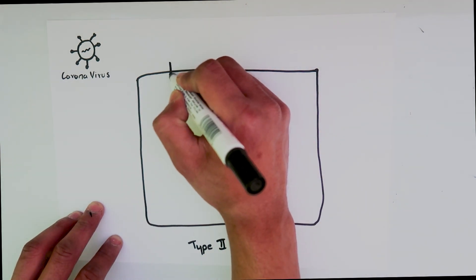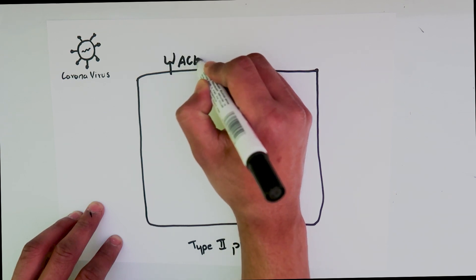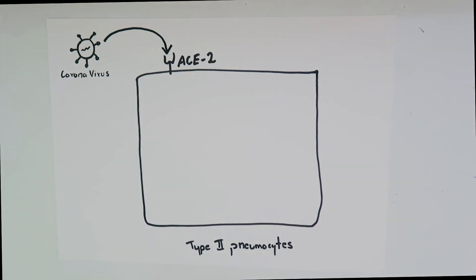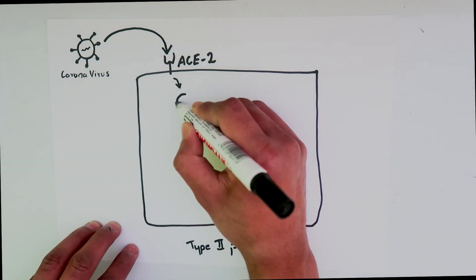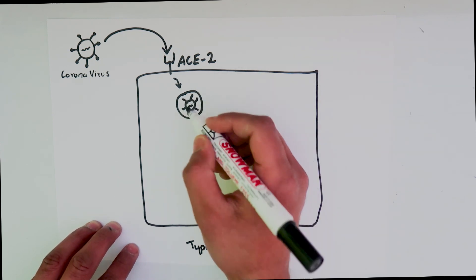So how does this coronavirus attack these cells? There is a receptor on the surface of type 2 pneumocytes called angiotensin converting enzyme 2. Coronavirus binds with this receptor and is engulfed inside the cell, forming an endosome.